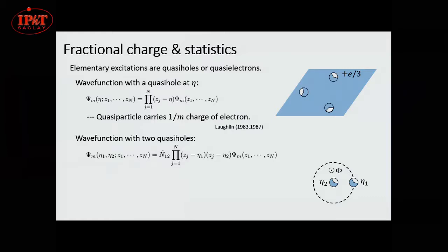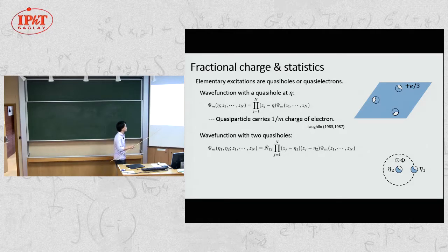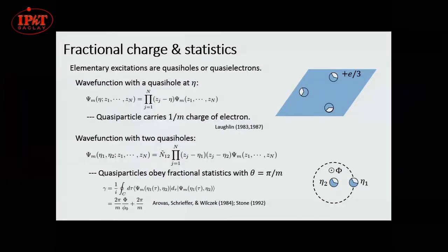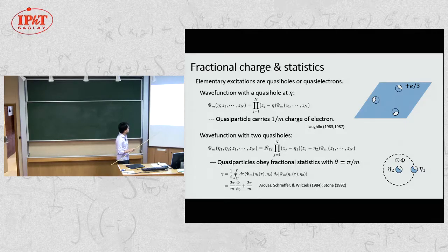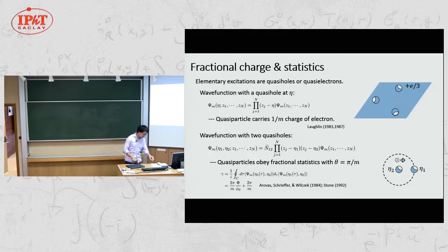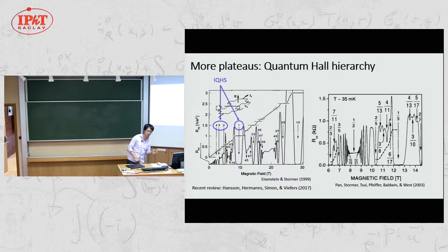Not only is the charge fractionalized, but these quasi-particles actually have fractional statistics. This can be seen by exciting two quasi-holes at eta₁ and eta₂, then circulating one quasi-particle around the other and calculating the holonomy along the adiabatic change to the wave function. That gives, on top of the Aharonov-Bohm flux from the 1/m charge, an additional factor intrinsically coming from the fractional statistics of the quasi-particle.